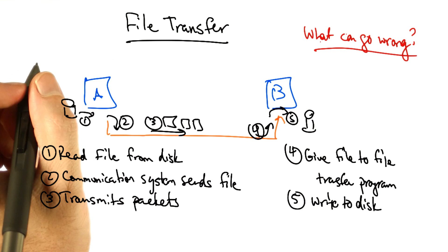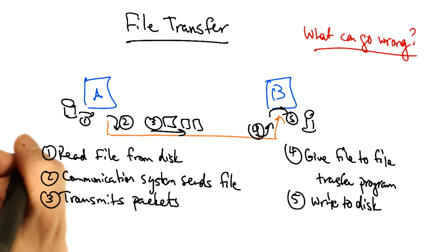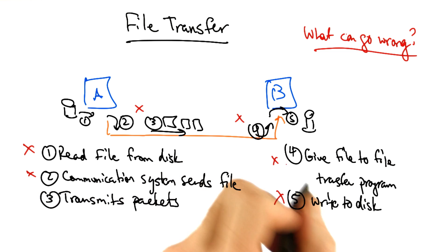So what can go wrong in this simple file transfer setup? Well first, reading and writing from the file system can result in errors. There may be errors in breaking up and reassembling the file. And finally, there may be errors in the communication system itself.